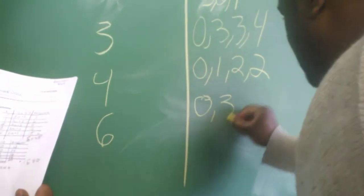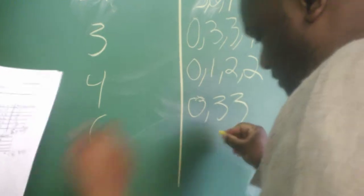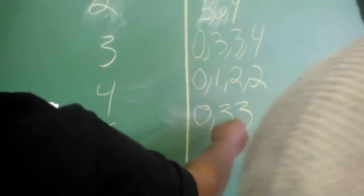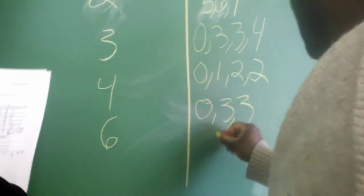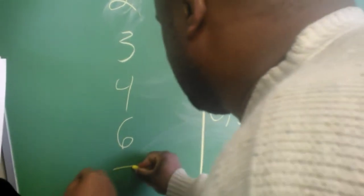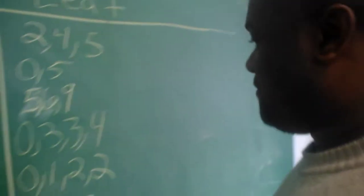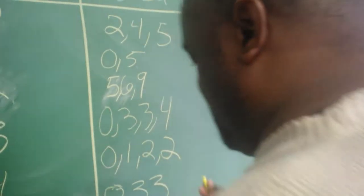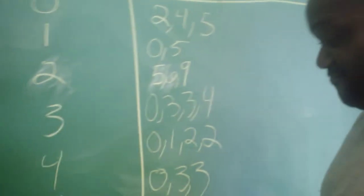Zero. And then seven. And it's what? Zero. Exactly. He's got it, right?